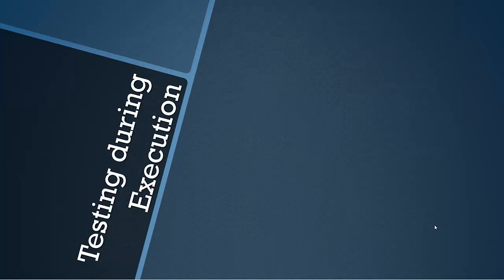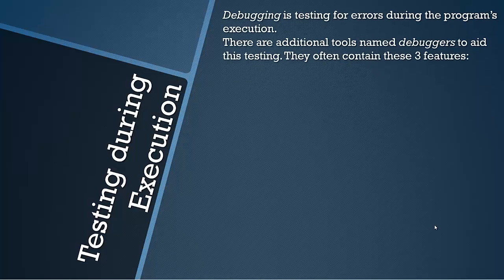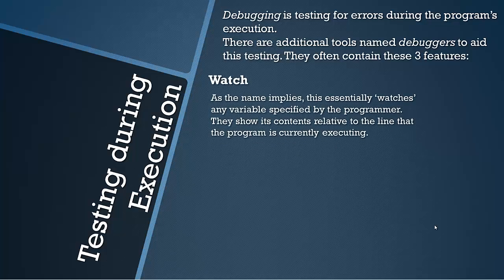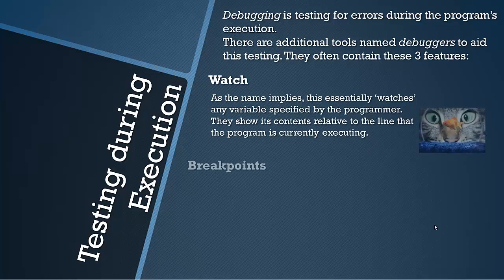Let's have a look at testing during execution. Execution is the stepping through the program line by line, the running of the code. Debugging is testing for areas during the program's execution and there are tools named debuggers to aid this testing. They often contain three features, the first of which is Watch. Watches basically watch any variable given to it by the programmer and show its contents relative to the line that the program is currently executing.